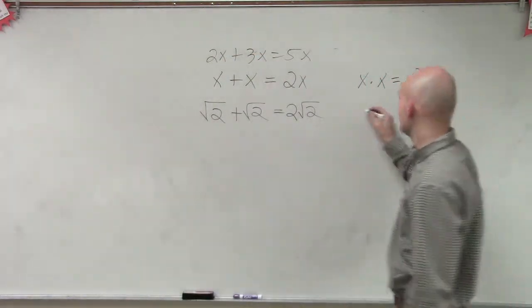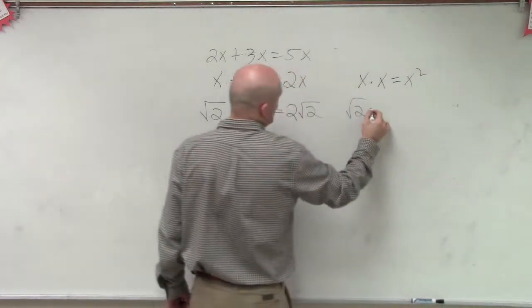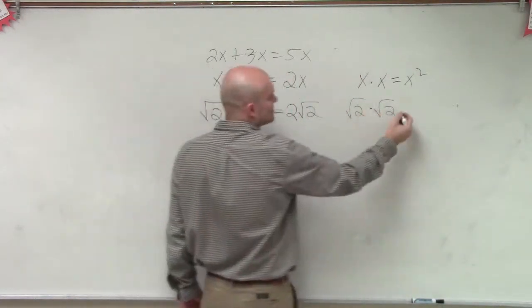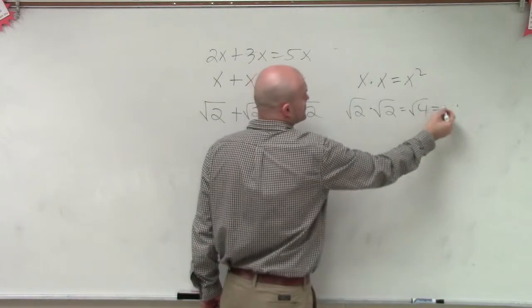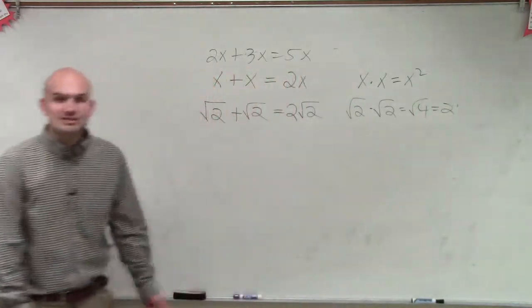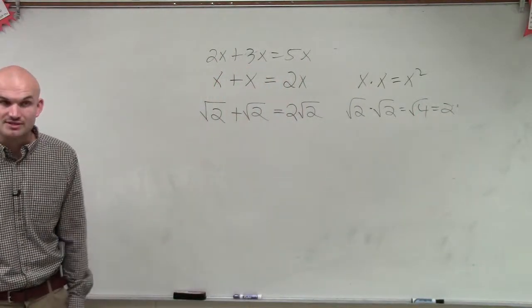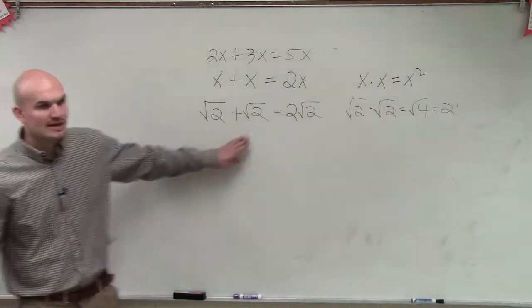Now, real quick to go through this, what if I said the square root of 2 times the square root of 2? You multiply these numbers, which is the square root of 4, which we now know is 2. But notice, ladies and gentlemen, there is a difference. Now, does everybody kind of understand this?